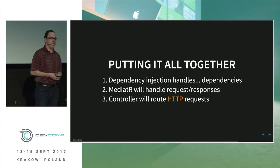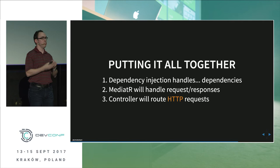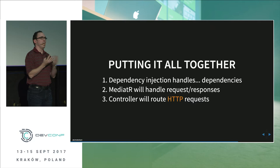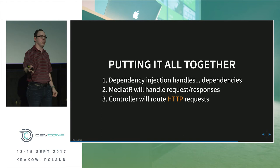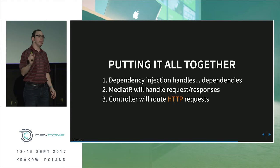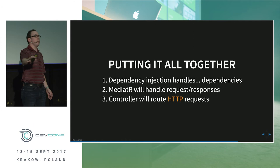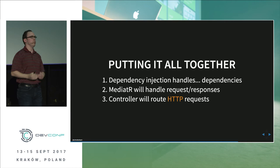Let's put it all together. Dependency injection handles the dependencies injected into services and validators — with the application DbContext at the head. Mediator handles requests and responses: it knows about requests and handlers, and that's all it does — all the plumbing under the hood, as long as you've registered it in the DI container. And the controller does what it does best: represents HTTP requests. If you saw Jimmy Bogard's domain-driven design talk, he showed this exact thing — a very thin controller responsible only for handling HTTP requests.